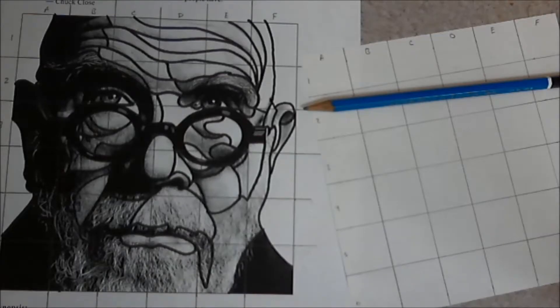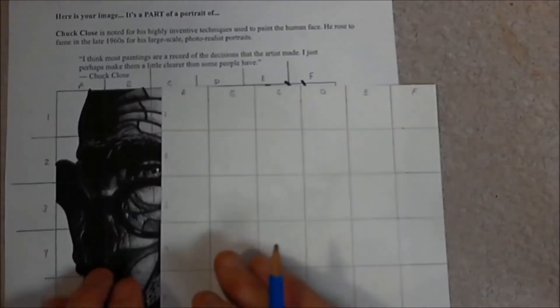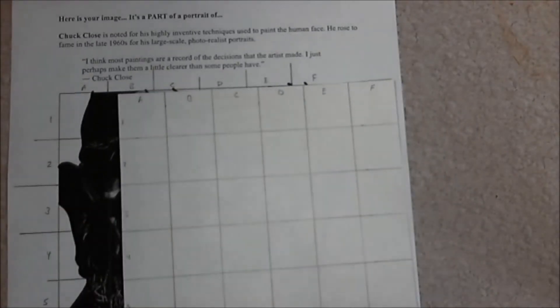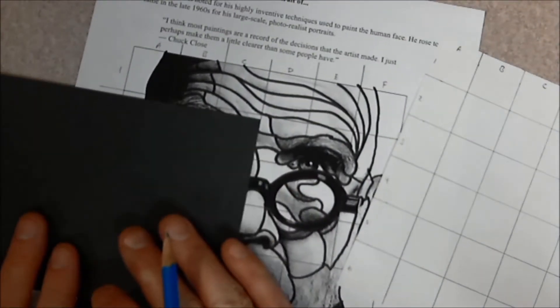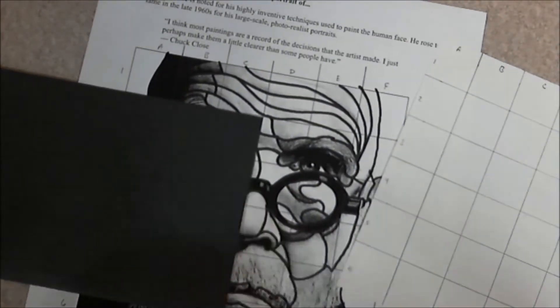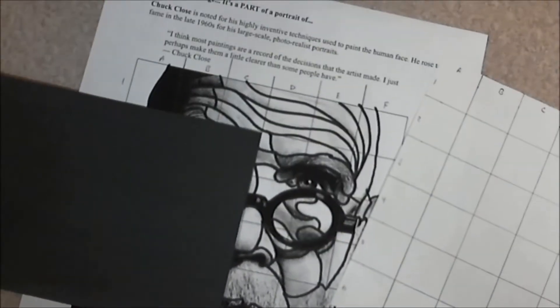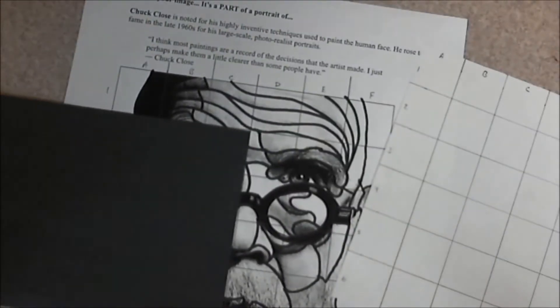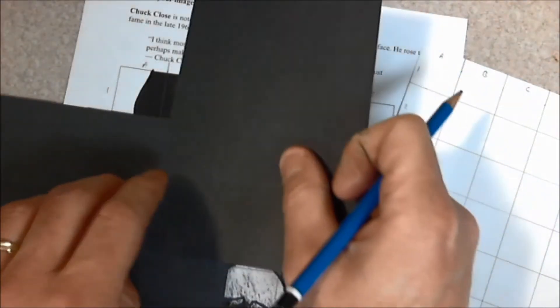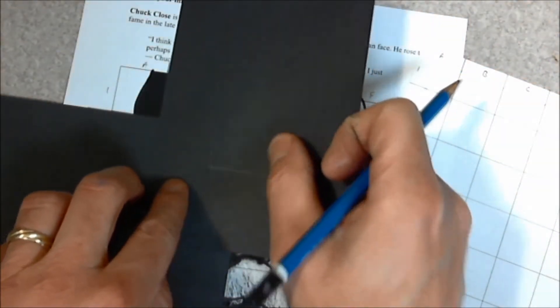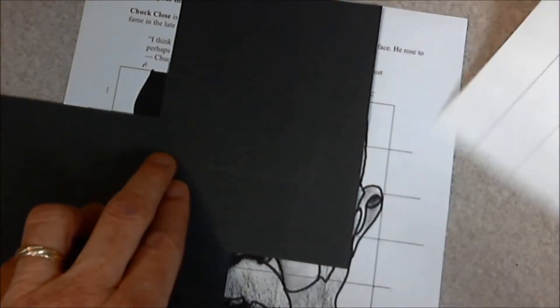Now what I'm going to do now is I'm going to begin transferring one square at a time. What I might do is if I wanted to simplify it even more, I could take a viewfinder. I don't have a viewfinder made, but I could take individual sheets of paper, and I could simplify this square. I could take another piece of paper and create a viewfinder.